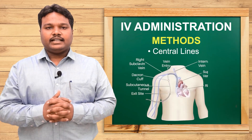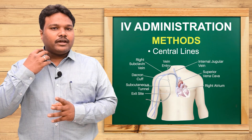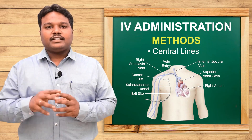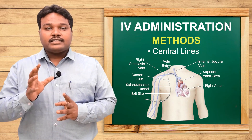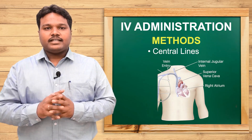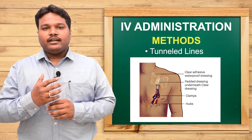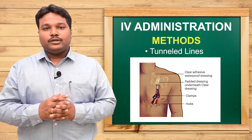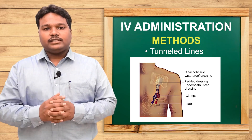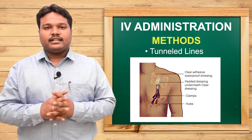Central lines are placed in the area of the jugular vein or femoral artery for constant maintenance of fluid and nutritional therapy for the patient. Tunneled lines are mainly used to drain blood secreted during cardiothoracic operations in the operation theater.